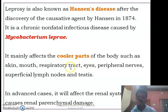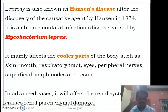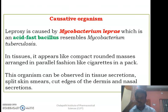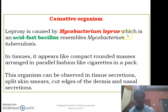Mycobacterium leprae affects the cooler parts of the body such as skin, mouth, respiratory tract, eyes, peripheral nerves, superficial lymph nodes, and testes. In advanced cases, we will also observe damage to the renal system as well as other organ systems. Mycobacterium leprae, the causative agent of leprosy, is acid-fast in nature.